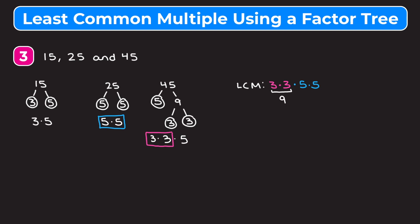Now we simplify: 3 × 3 = 9, and 5 × 5 = 25, so we have 9 × 25. If you can't do this in your head, feel free to use a calculator. Nine times 25 gives us an LCM of 225. Hopefully this video helped you understand how to find the least common multiple using a factor tree. For more practice with similar problems, check out the link in our description for a free practice worksheet.